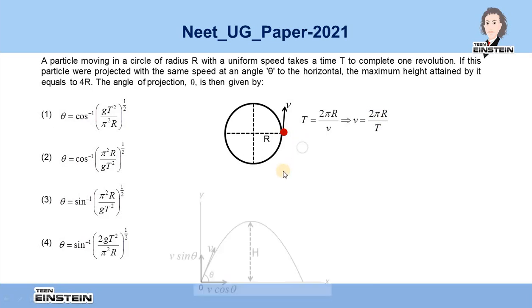In the problem it is stated that if the particle is projected with the same speed but at an angle theta with the horizontal, the particle would attain maximum height H equal to 4R. This condition is given.